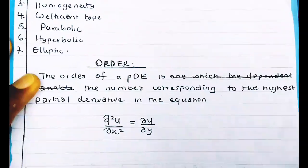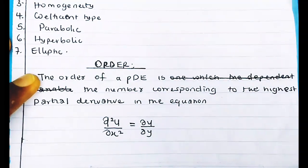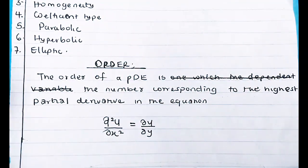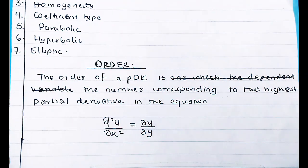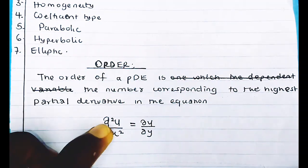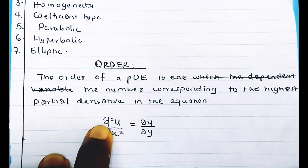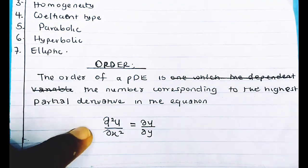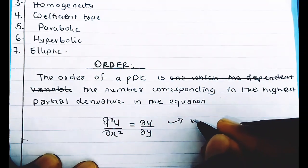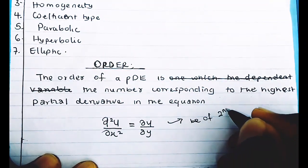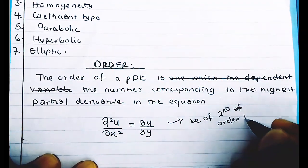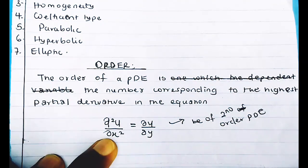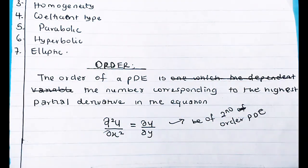For example, in a PDE with a derivative of u with respect to x (order 1) and a derivative of u with respect to y of order 2, the highest order derivative is 2. So we call this a second-order PDE.